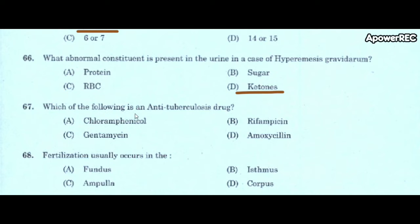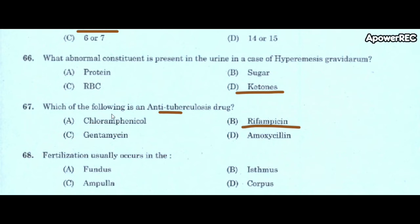Next question: which of the following is an antituberculosis drug? Antituberculosis means a drug against TB. A) chloramphenicol, B) rifampicin, C) gentamicin, D) amoxicillin. Correct answer is rifampicin. Rifampicin is the antituberculosis drug.